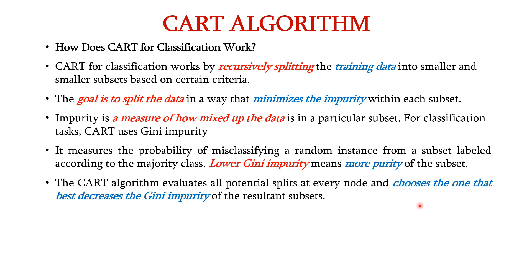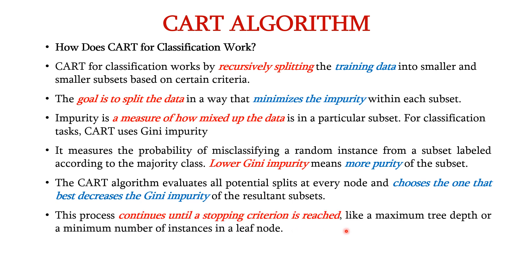The CART algorithm evaluates all potential splits at every node and chooses the one that best decreases the Gini impurity of the resultant subsets. This process continues until a stopping criterion is reached, like a maximum tree depth or a minimum number of instances in a leaf node.